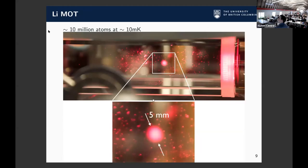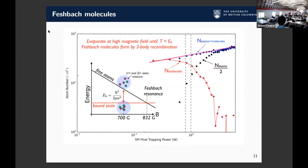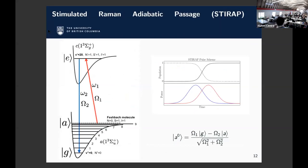We start with a lithium MOT at 10 millikelvin, load into a cross dipole trap, and align our Raman lasers for photo-association overlapping with one of the beams. We do evaporation near the broad Feshbach resonance in lithium, and through three-body collisions we form molecules quite efficiently — as you go to sufficiently low temperatures you convert your atomic sample into a sample of Feshbach molecules. From this Feshbach molecule state, we do a two-step photo-association. With two photons you couple into a ground state — you can't go directly because of selection rules.